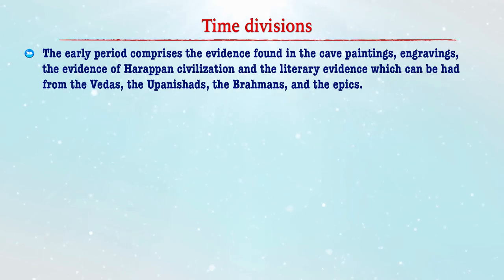The first time division is the early period comprising of evidence found in cave paintings, engravings, the evidence of Harappan civilization, and the literary evidences from the Vedas, the Upanishads, the Brahmanas and the epics. In this context, the role of Hindu gods is of immense importance. In Hindu mythology, dance is believed to have been conceived by Brahma. Brahma inspired the sage Bharat Muni to write the Natya Shastra, a work on performing art which is a codified practice of dance and drama. The best known Hindu gods such as Shiva, Kali and Lord Krishna are typically represented through various dance forms in painting and sculpture.